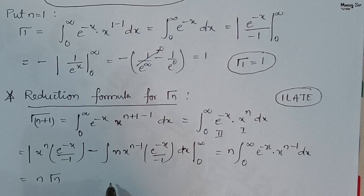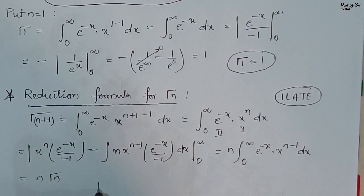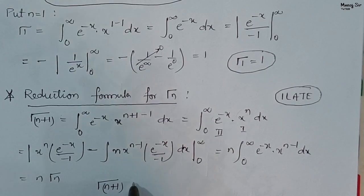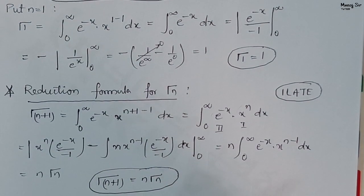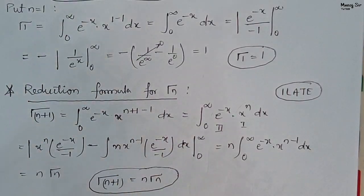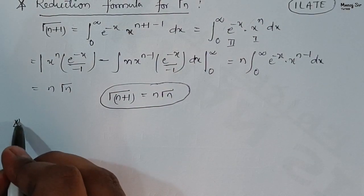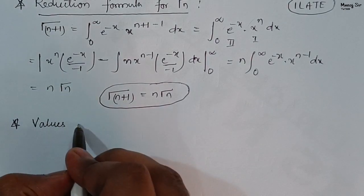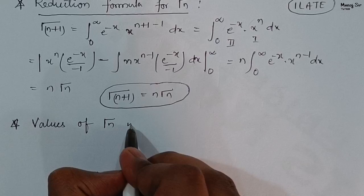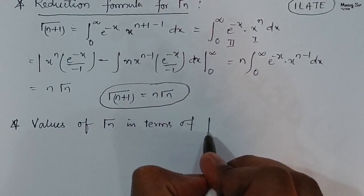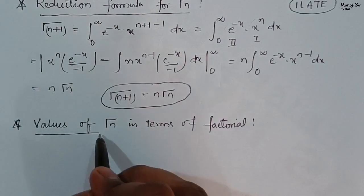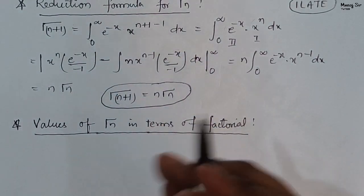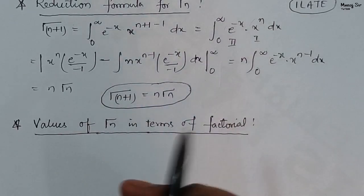So here we have the important result: Gamma(n+1) equals n times Gamma(n). This is a very important result that may be asked in exams. After this, we will find the values of Gamma(n) in terms of factorials, because while solving problems you need to find the values of various gamma expressions.